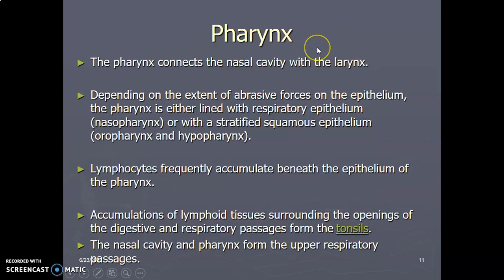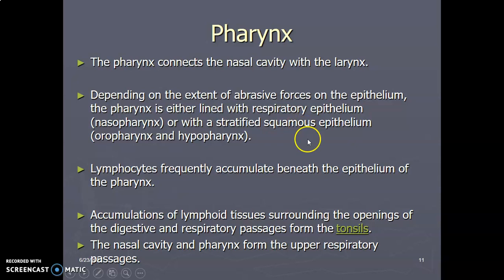The pharynx connects the nasal cavity to the larynx, and the epithelium depends on the extent of abrasive forces. The pharynx is lined with respiratory epithelium in the nasopharynx, but as you go downwards to the oral pharynx and hypopharynx, the epithelium changes to stratified squamous. Lymphocytes are found under the epithelium of the pharynx for immune function — they aggregate as lymphoid tissue under the mucosa, and at the opening of the GI and respiratory passages they form tonsils: palatine tonsils in the oral pharynx and adenoid tonsils in the nasopharynx.